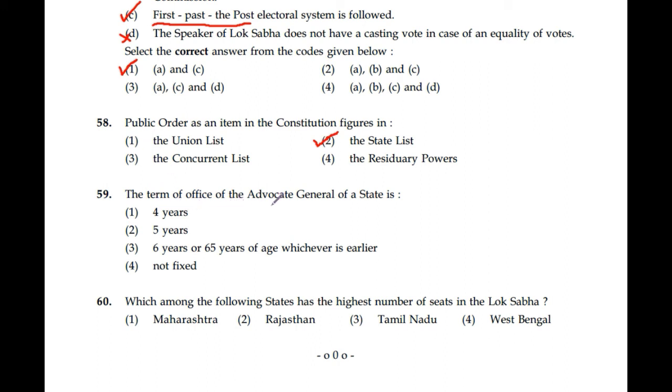Question number 59: The term of office of the advocate general of a state is not fixed. Fourth option is the correct answer.